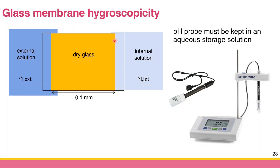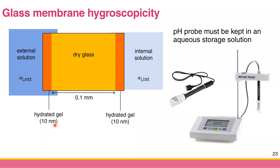Once you put the glass membrane in aqueous solution, hydration occurs, turning the glass membrane into something called a hydrated gel. That's why we say the glass membrane is hygroscopic — it absorbs water to become a gel. The orange-ish area in the diagram is the hydrated gel, and it has a very small thickness of only about 10 nanometers, compared to the dry glass which might be about 0.1 mm.